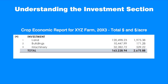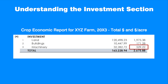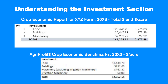The last section is investment. It provides a summary of investments such as land, buildings, and machinery dedicated to each individual field or crop enterprise, reported as total value and value per acre. Land value per acre reflects the regional land sale prices for the corresponding type of land — in our example, about $1,975 per acre. The buildings investment, frequently represented by grain storage facilities, is $171.28 per acre, and the machinery investment is about $529 per acre. Comparing crop investment measures with the benchmarks allows a producer to examine investment intensity and efficiency of crop production.